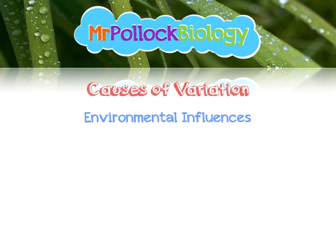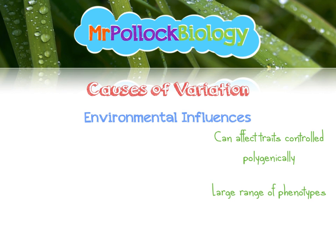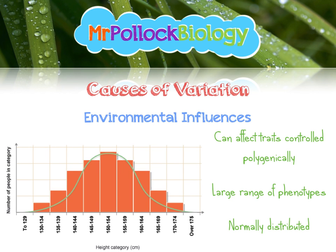The environment can affect any traits that are controlled by more than one gene. Because genes set the range and the environment determines whereabouts in that range you end up, there's a very large range of phenotypes. If we plot all of these on a graph, we see it's normally distributed — here's the height of people in the UK, showing that nice bell curve where the mean, mode, and median are all at the very centre. We can't group people into distinct groups of short, medium, or tall. It's a continuous range of phenotypes, so we express it as a histogram rather than a bar chart.